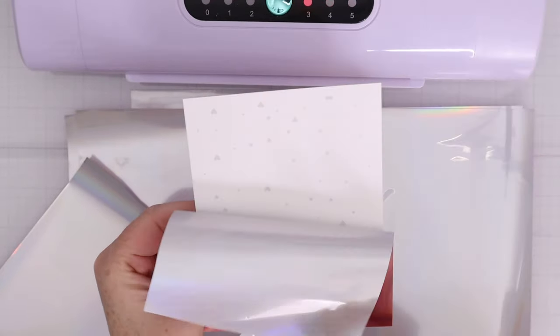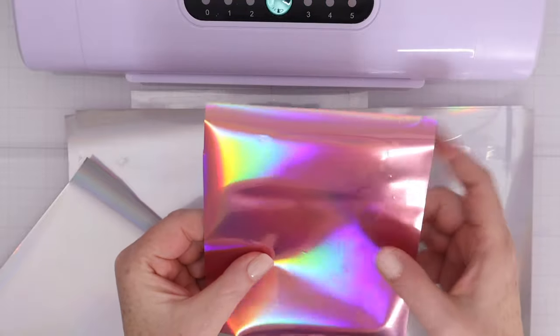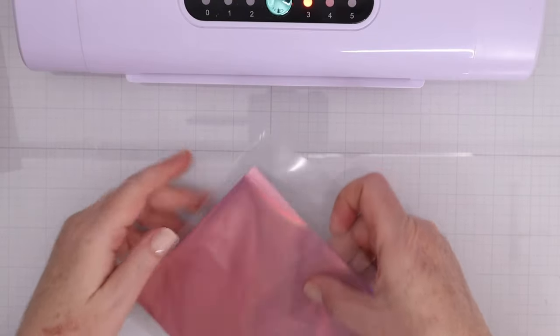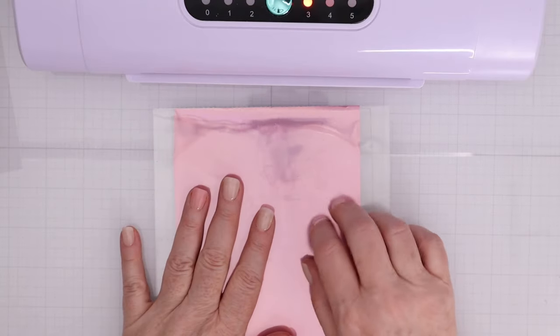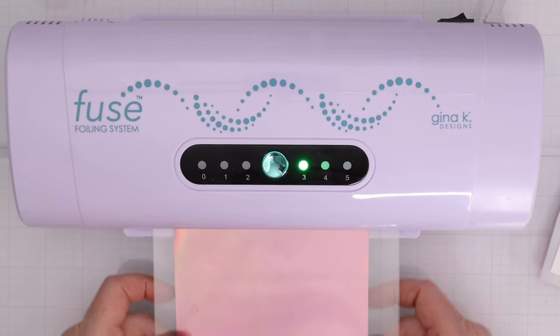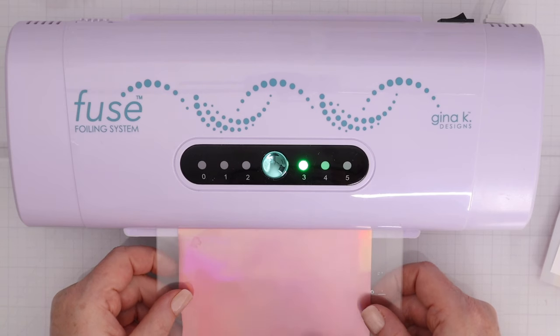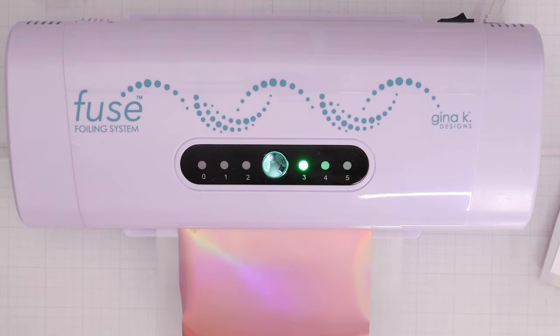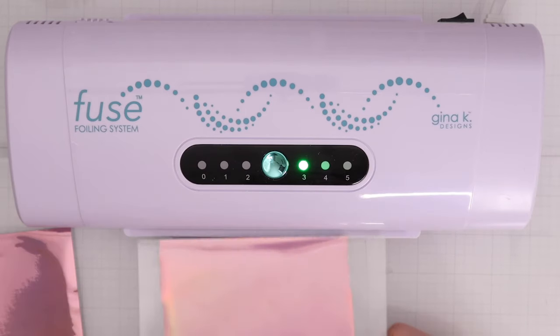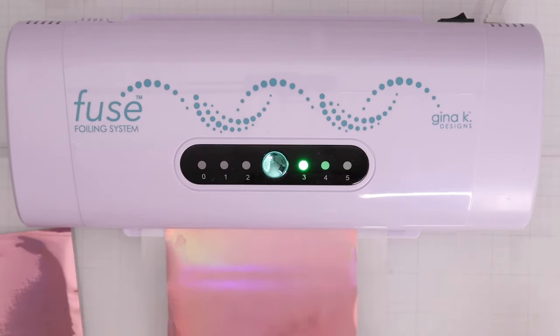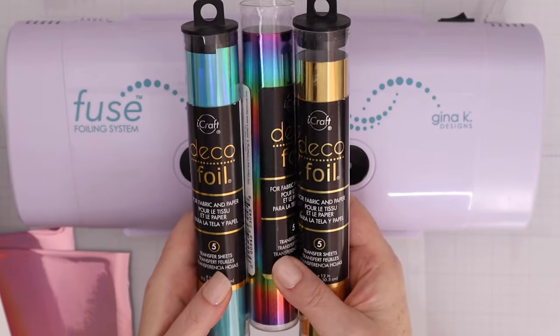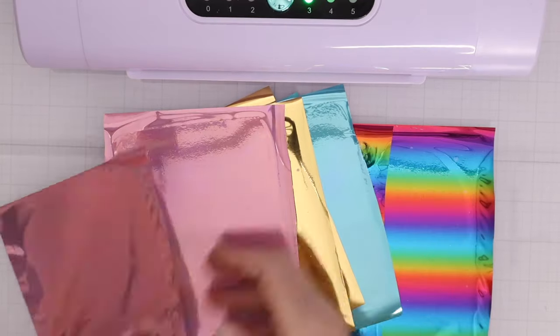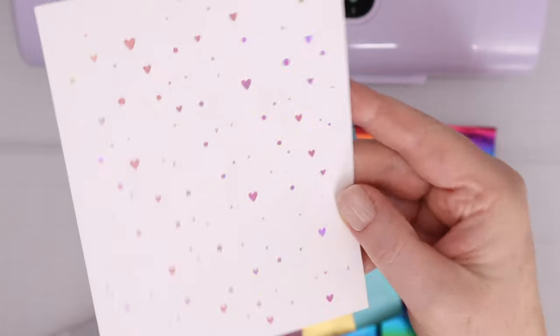Now I've cut a piece of foil slightly larger than the polyglaze which is four and a quarter by five and a half. I place the foil on top of the polyglaze inside a carrier and place that inside the fuse. The color is facing up. The silver side is facing down towards the design and I'll let that run through the machine and then I let it cool before I peel them off. Here are the other colors that I'll be using today of Thermoweb deco foil. They come in a whole rainbow of colors.